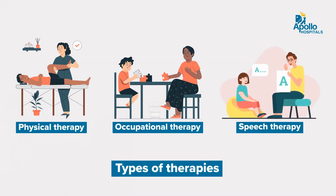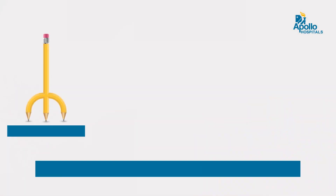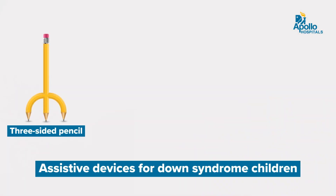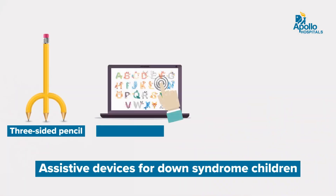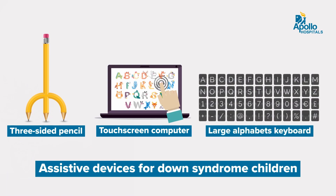When we're looking at assistive devices, Down syndrome children have some amount of learning disability. Assistive devices like a three-sided pencil, or using a touch screen computer, or using a keyboard with large alphabets helps the child learn much better.